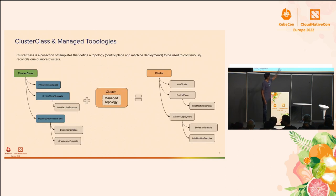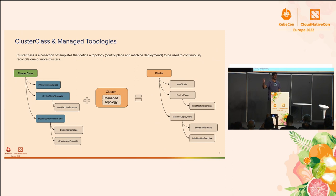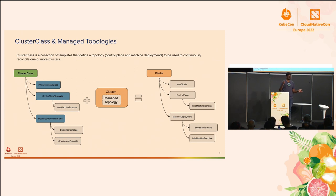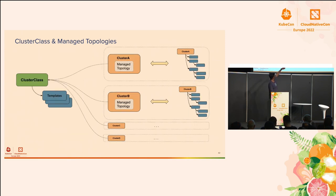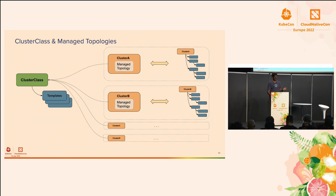Cluster class and managed topologies: the goal is to define the structure of a cluster — its topology — once, and reuse it across multiple clusters. You just have one cluster object with a topology section that can stamp out clusters that look the same multiple times. Multiple cluster objects all reference the same cluster class, and by changing the values in the managed topology, you can spin out multiple clusters that are similar but different in their own way.